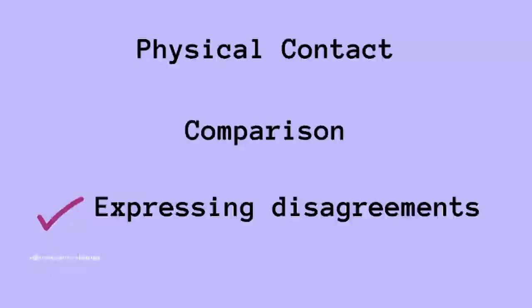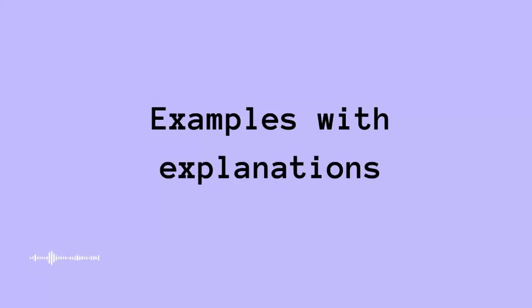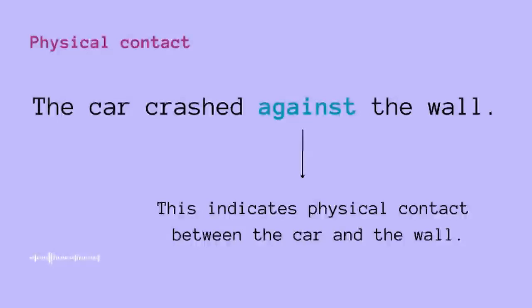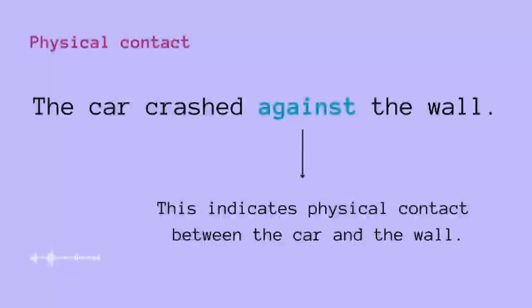Let's start with the first function: physical contact. Let's look at this example — 'the car crashed against the wall.' We are speaking about the car and the wall. The meaning of the sentence indicates physical contact between the car and the wall, meaning when the accident happened, the car touched the wall.